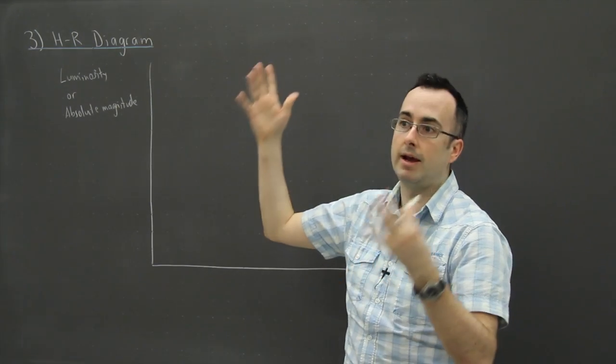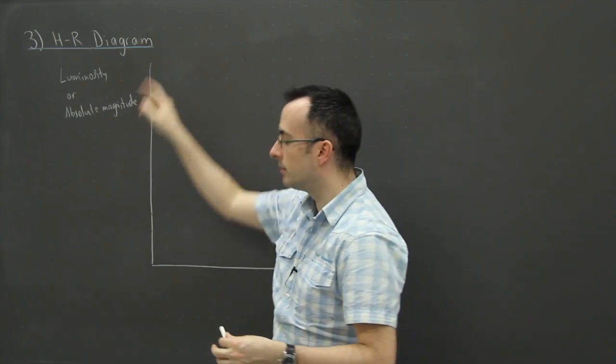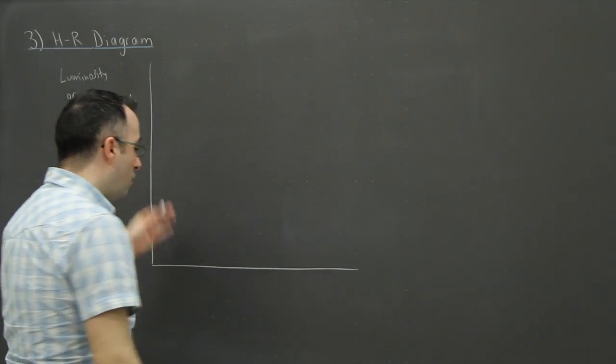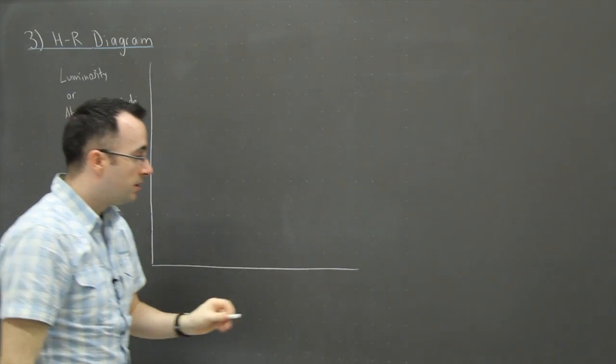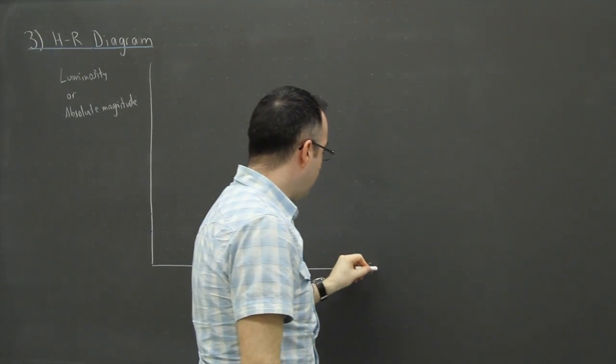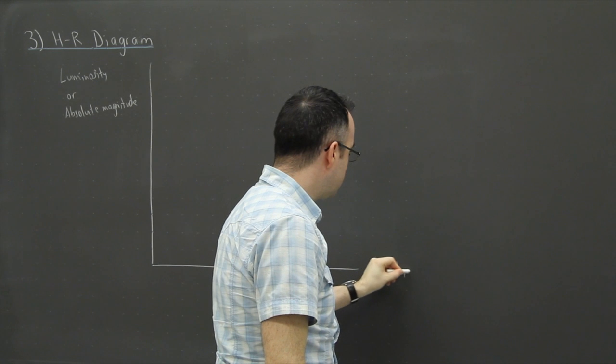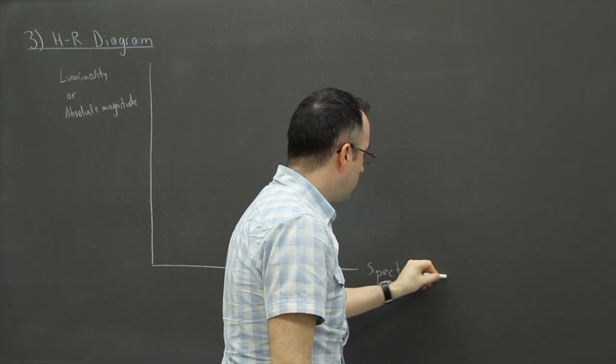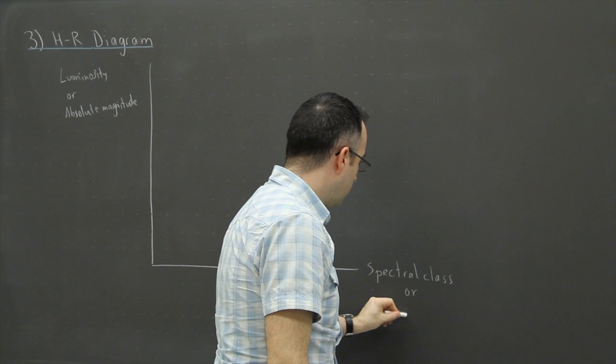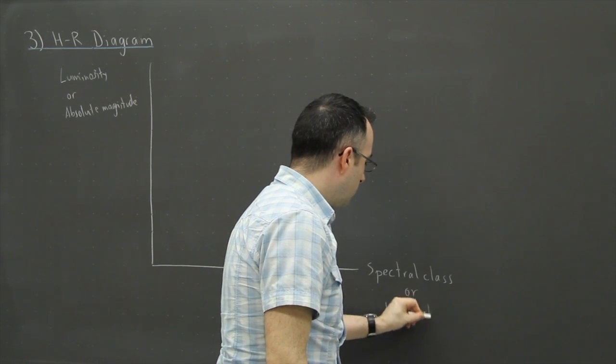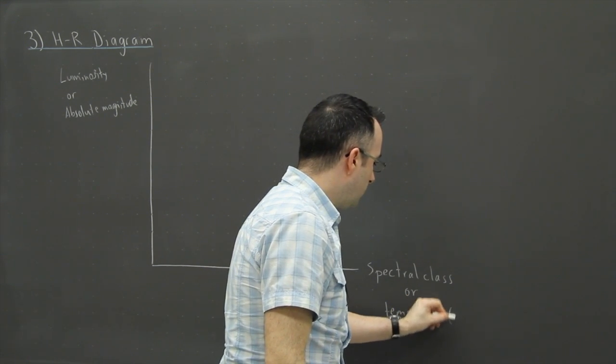So in this case this is some sort of plot of how bright stars really are in real life. If you could be close to it, it'd be extra bright, then it would be higher up here. Now you're supposed to know about this diagram. On the x-axis here we might have what's called spectral class, or we might also have temperature in Kelvin.